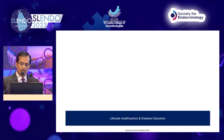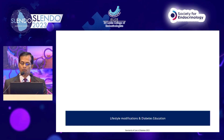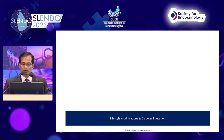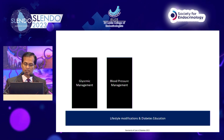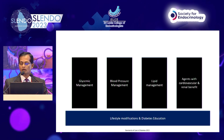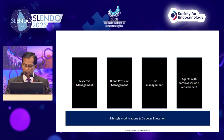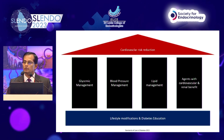Ladies and gentlemen, lifestyle modification and diabetes education are very important — diet, exercise, achieving proper weight, and stopping smoking. Glycemic management is important, blood pressure management is important, then lipids, then the agents with cardiovascular and renal benefits — if you address all of that, you are probably going to reduce cardiovascular risk in type 2 diabetes.